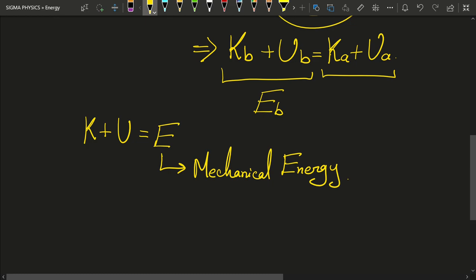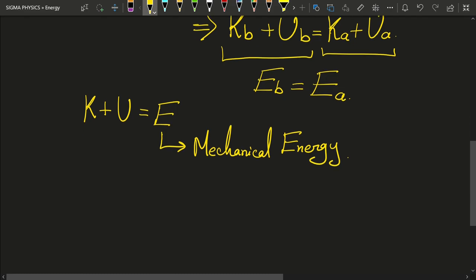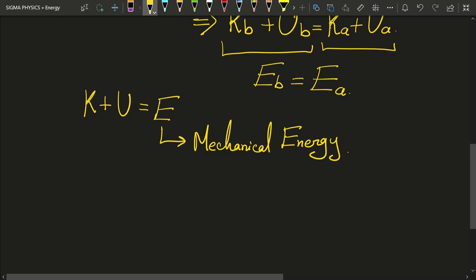That Eb, the energy at B, is equal to the energy at A. In fact, I should say mechanical energy. And in our previous videos, we had observed that the conservation of momentum had a similar form. We had seen that Pa was equal to Pb if the net external force on a body is zero. Similarly, here we can see that Eb is equal to Ea for a conservative force.